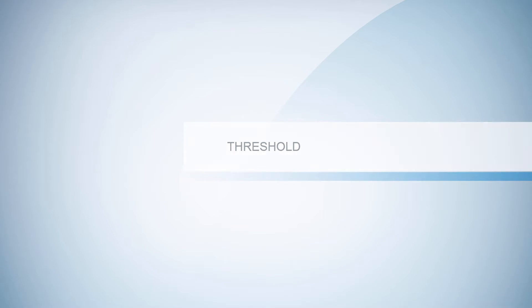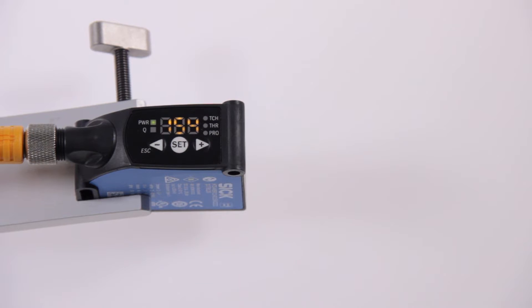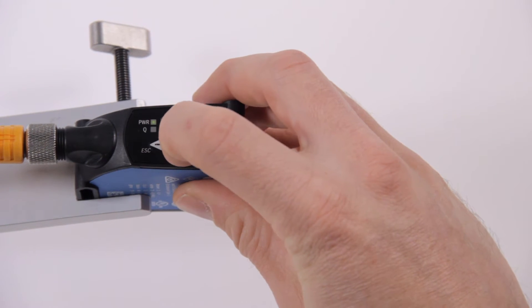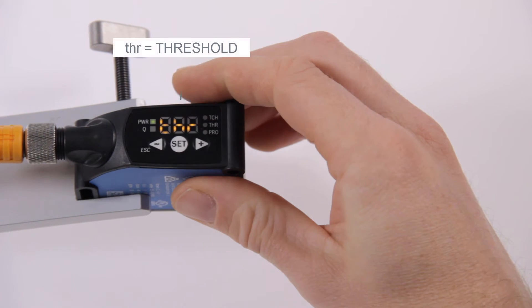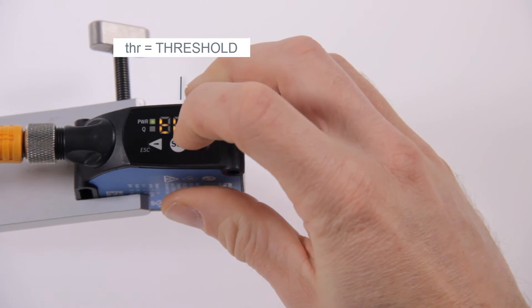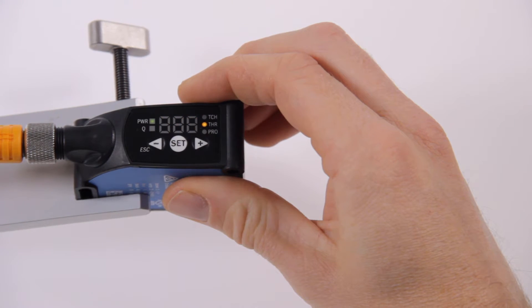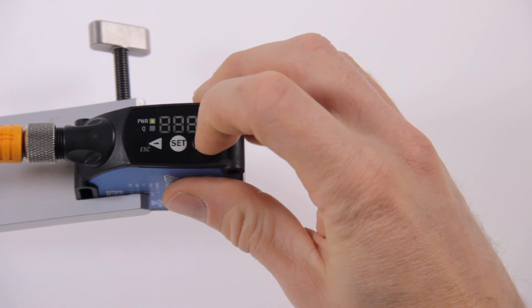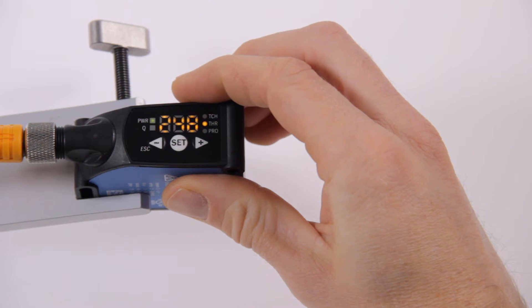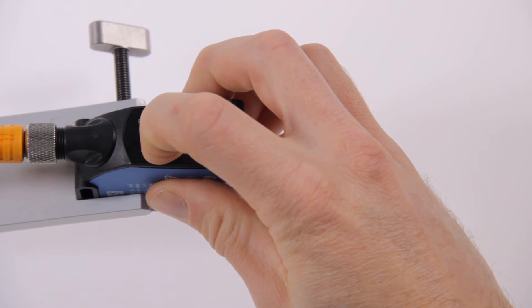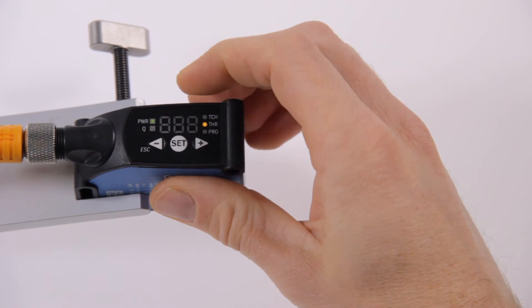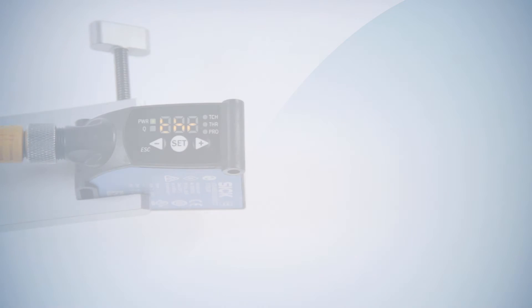Threshold. The automatically set threshold can be adjusted manually as well. Use the plus and minus buttons in order to navigate to THR for threshold. Confirm with SET. The shown remission value is the value that was set during teach-in, exactly in between the value of the mark and the background. Use the plus and minus buttons to move the threshold closer to the mark or the background. Confirm the new value with SET.